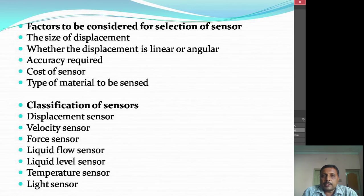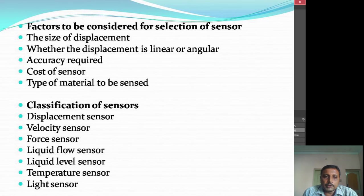Coming to the classification of sensors, we have displacement sensors, velocity sensors, force sensors, liquid flow sensors, liquid level sensors, temperature sensors, and light sensors. Today we will be covering only the displacement sensors. There are different kinds of displacement sensors.